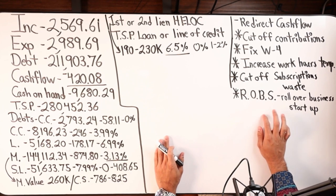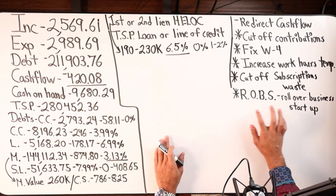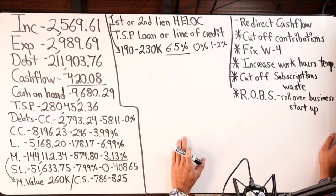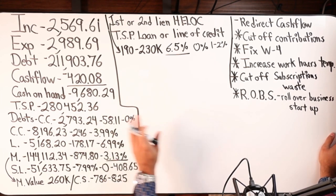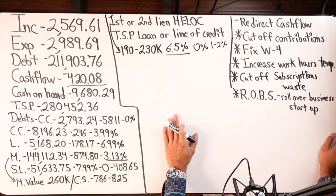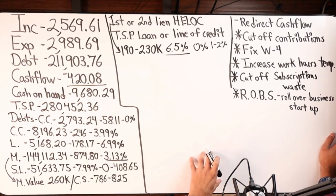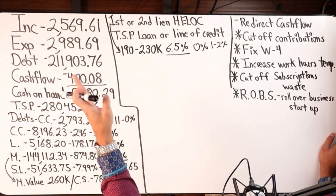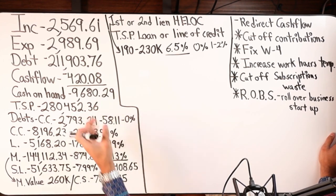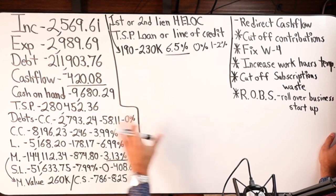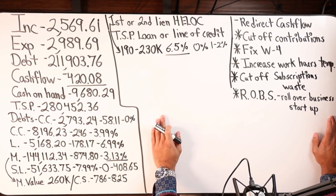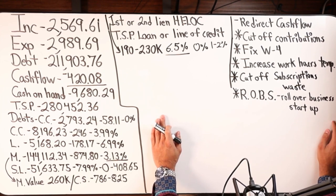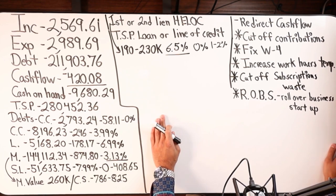Another option is called ROBS — Rollover for Business Startups. This person could potentially roll over their two hundred eighty thousand dollars from a retirement account into a business startup, which could generate cash flow and change the trajectory of their finances within six to twelve months. It can provide the capital needed to put this person in a better financial position without having to pay early retirement penalty fees. I'll put a resource for that in the chat.